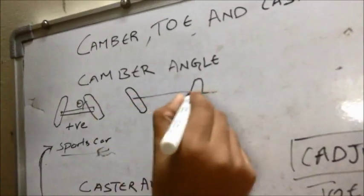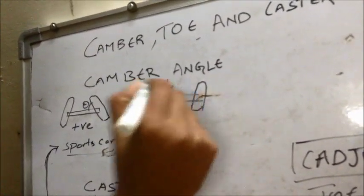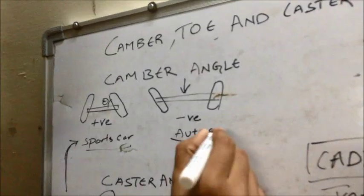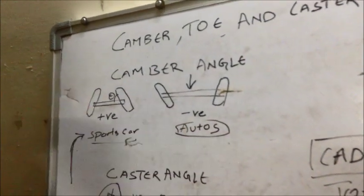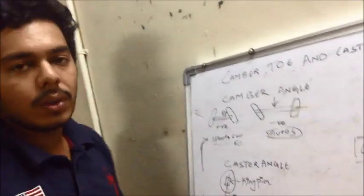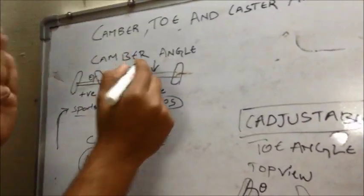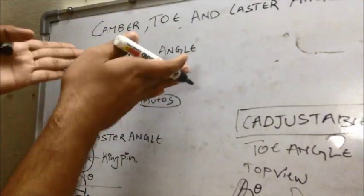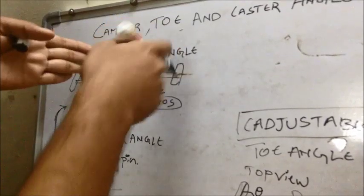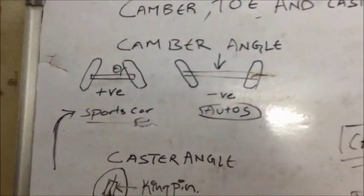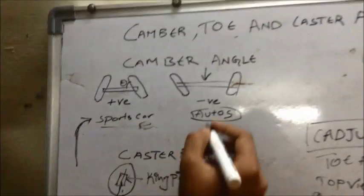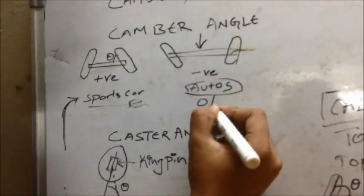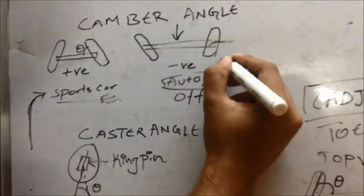Then coming to the negative camber angles. These are used in very heavy load applications like autos and generally used in autos basically because there are high load applications. When excessive load is applied, these tires align among themselves like this. It becomes straight.